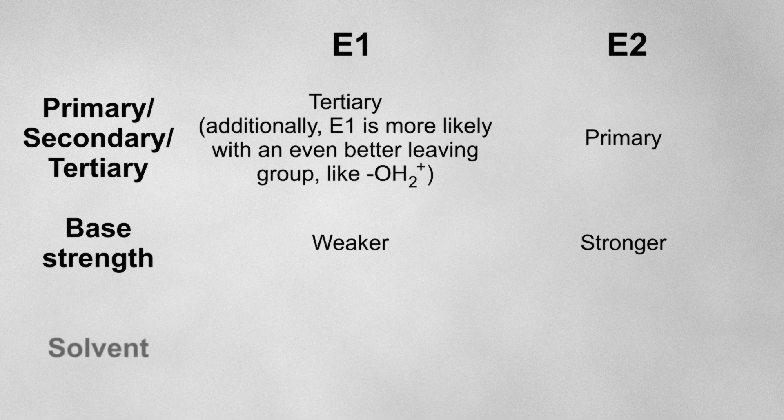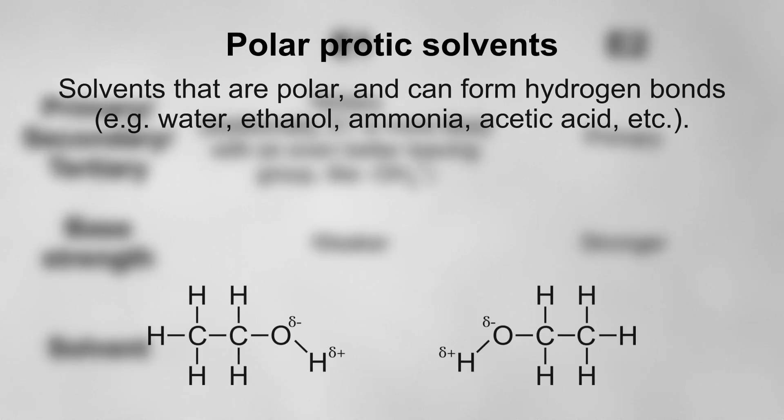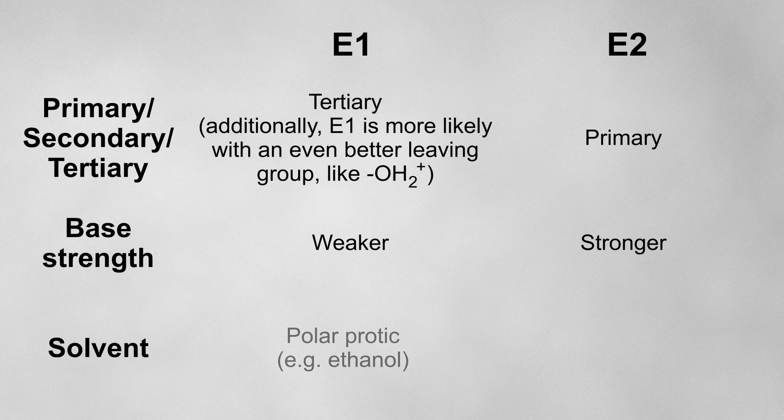The other factor to consider is the solvent. Polar protic solvents can form hydrogen bonds, and are better at stabilizing carbocations. So using a polar protic solvent, such as ethanol, tends to favor E1.